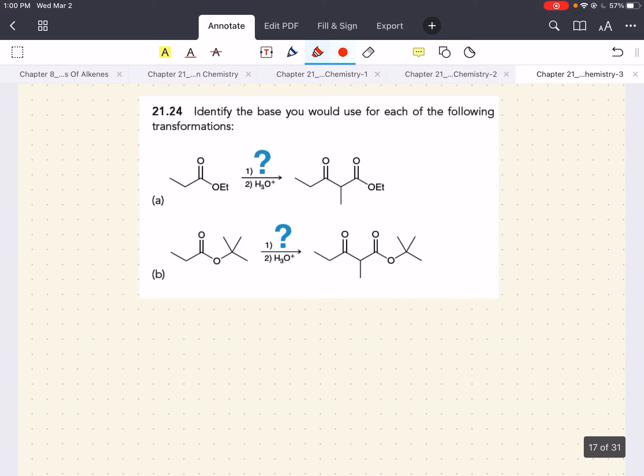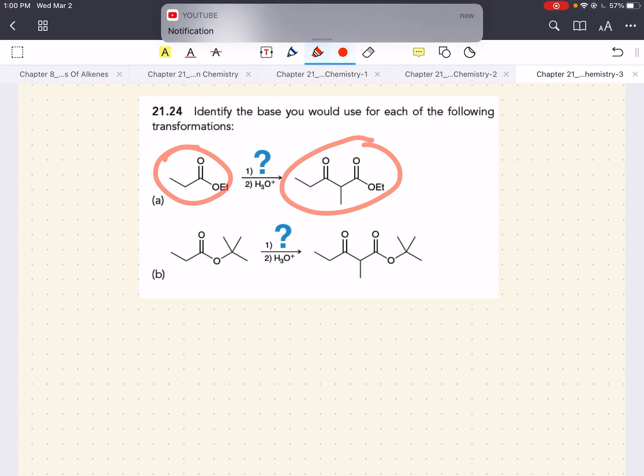Now, with all that being said, let's put this into play with a few practice problems. This one says, identify the base you would use for each of the following transformations. So here we have an ester as a starting material, and this beta-ketoester as a product. We know that this is going to be a Claisen condensation between two identical products.